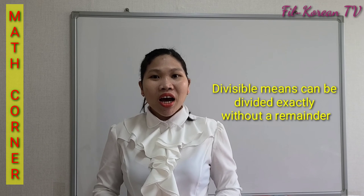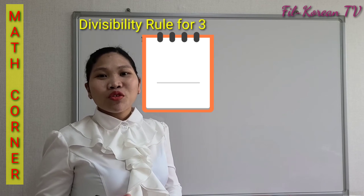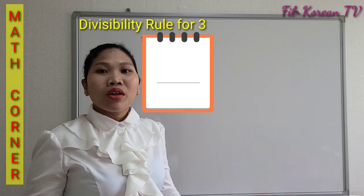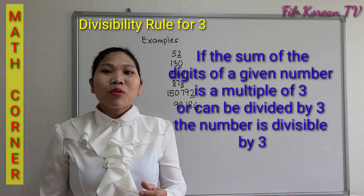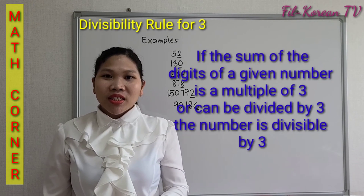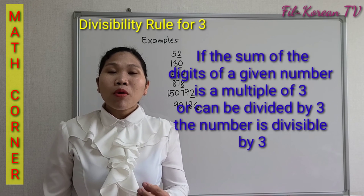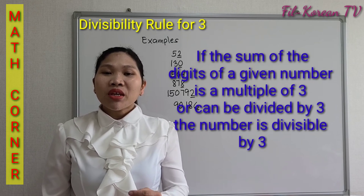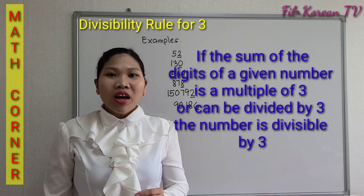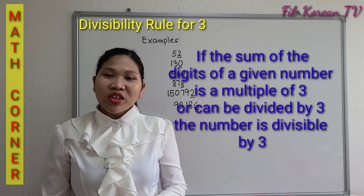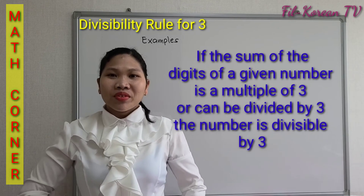Without a remainder. Now let's proceed to the divisibility rule of 3. If the sum of the digits of a given number is a multiple of 3, or can be divided by 3, that number is divisible by 3.